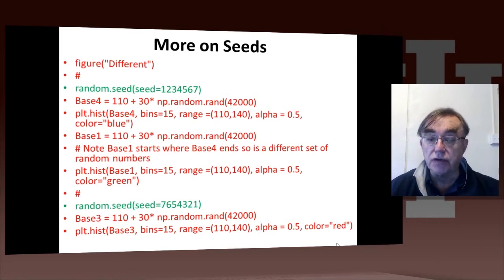Base1 just leaves off where base4 finishes. So it's actually related to base4, but if we have a decent generator, there is no correlation between random numbers, between one random number and the next. And so base4 and base1 should be fine and should be different.